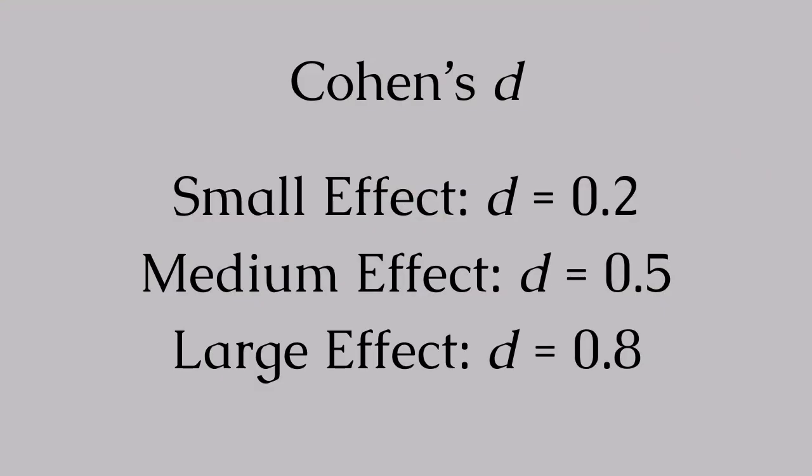Understanding how to interpret effect size is crucial. Cohen himself gave us this guidance. A small effect size, around 0.2, might be noticeable but doesn't always translate to practical significance. A medium effect size, around 0.5, is typically clear and visible to the observer. A large effect size, around 0.8 or higher, signifies a substantial impact that's hard to ignore. However, a quick note of caution: while these benchmarks are helpful, they're not universal truths. This is one of those cases where you really have to apply your own professional judgment to determine the practical implications of your findings.